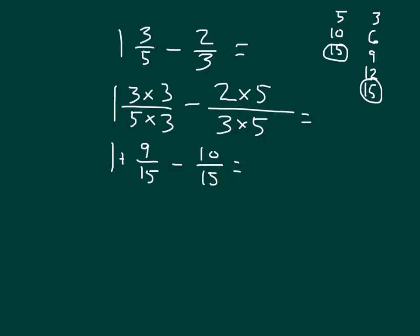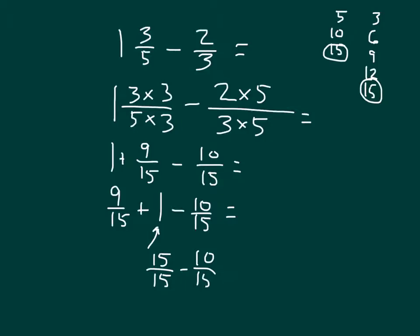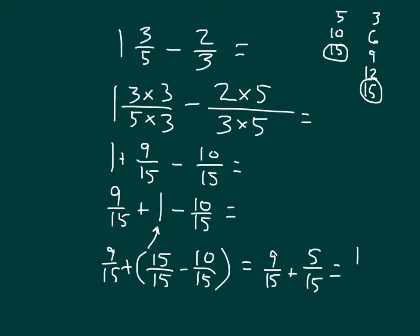In this case, I cannot solve 9 minus 10 fifteenths. So I'm going to reorder this as 9 fifteenths plus 1 minus 10 fifteenths. I'll rewrite one whole as 15 fifteenths, subtract 10 fifteenths from it, and then do not forget the 9 fifteenths, which will equal 9 fifteenths plus 15 fifteenths minus 10 fifteenths, which is 5 fifteenths, giving us our answer of 14 fifteenths. So 1 and 3 fifths minus 2 thirds is 14 fifteenths.